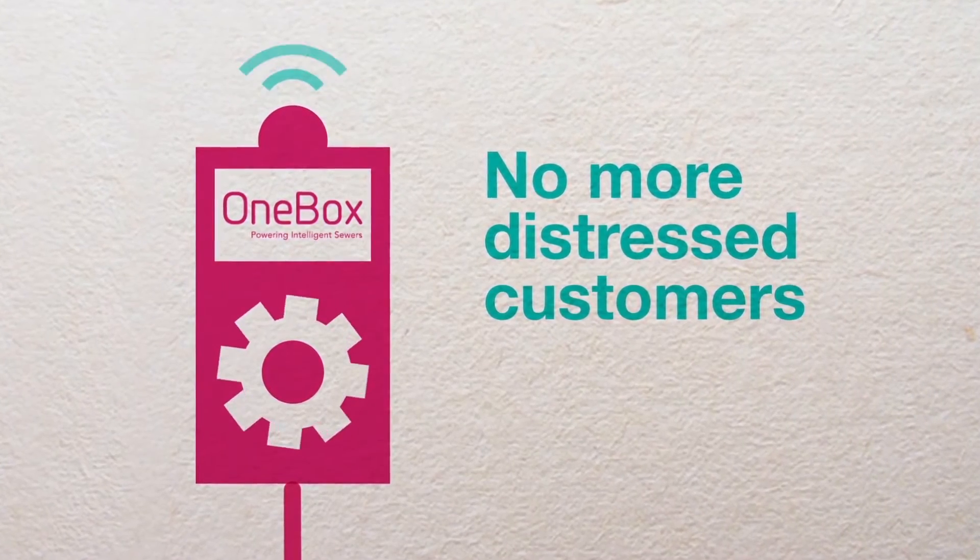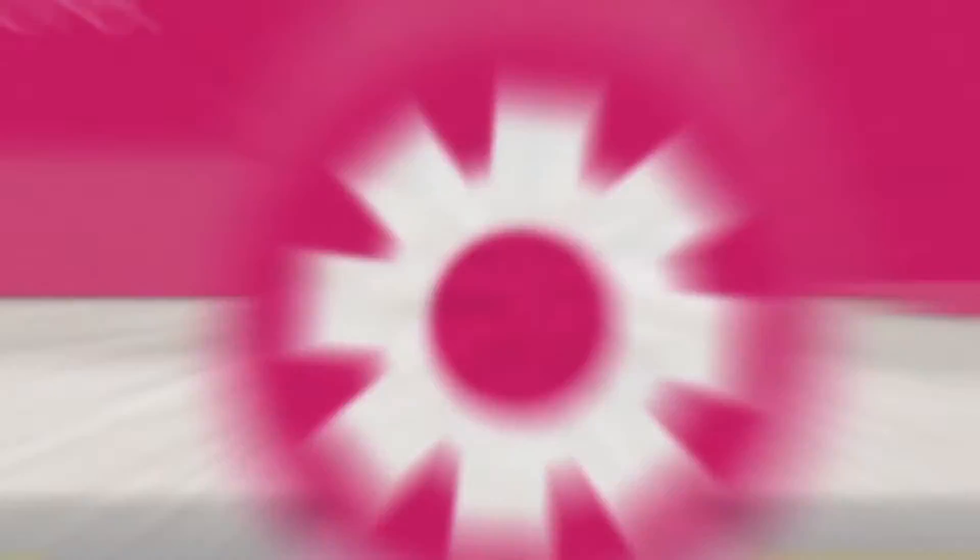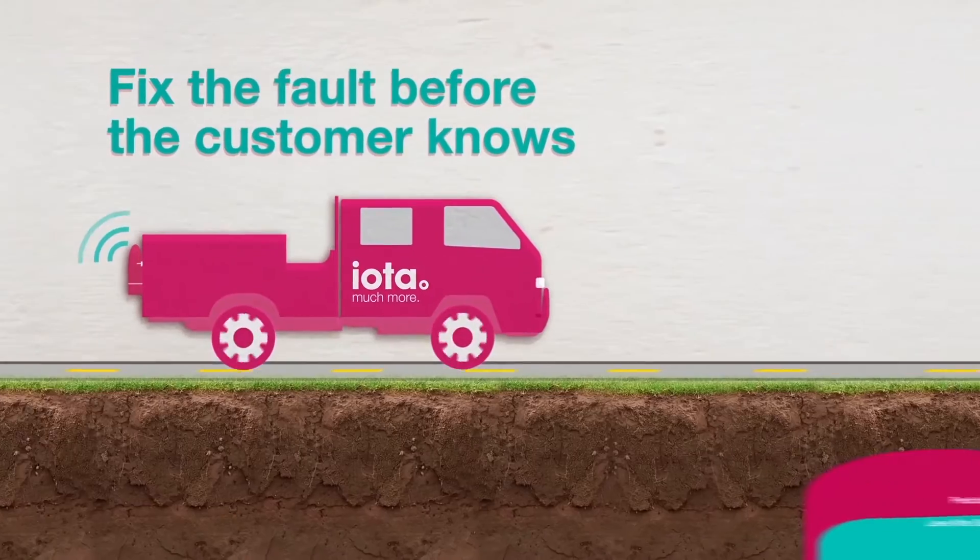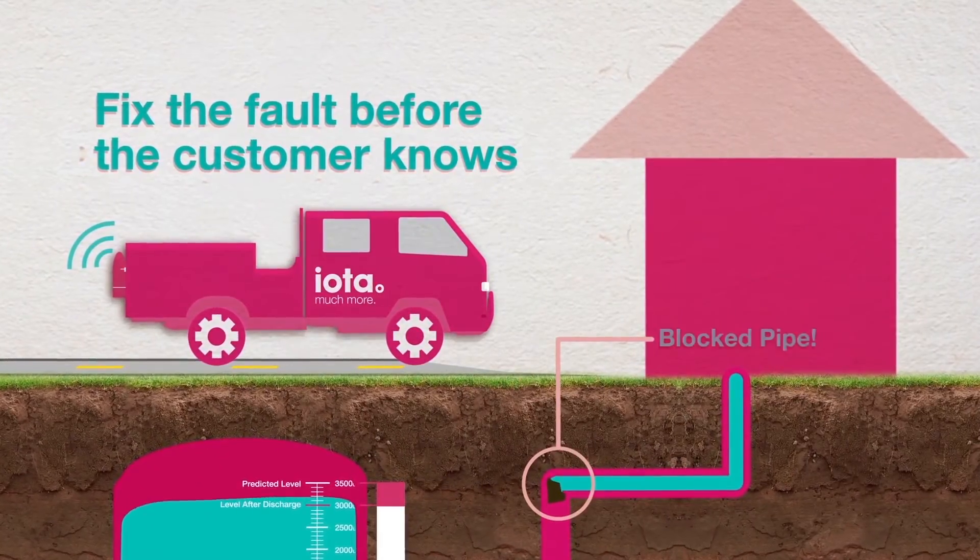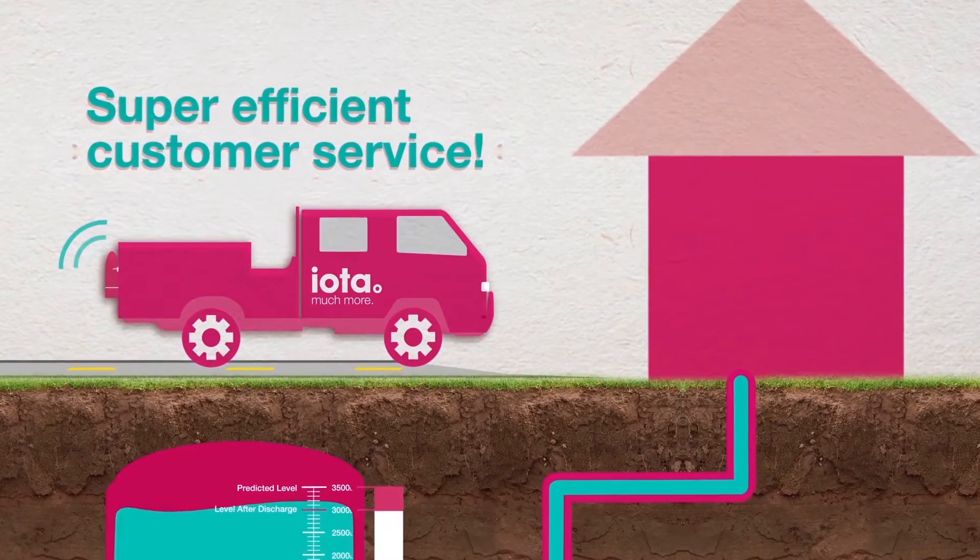With OneBox, we are the first to see alarms and alerts. We can get out and fix the fault even before our customers know about it. That's super efficient customer service.